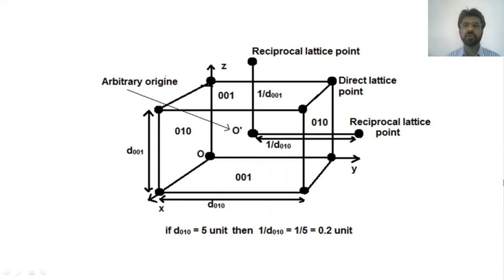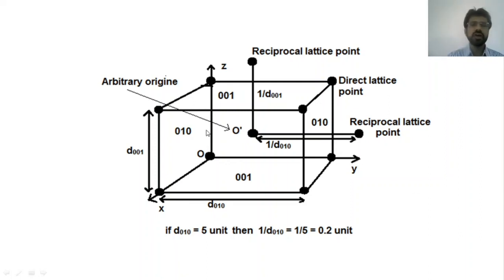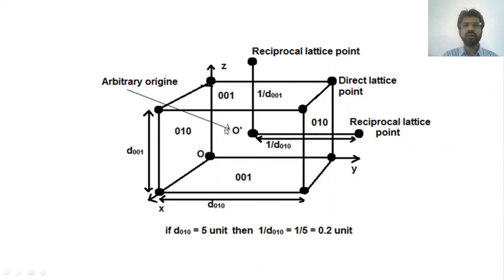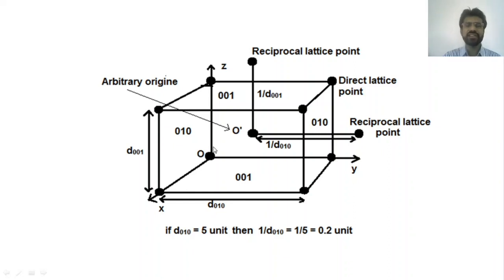Now we will see how to represent the reciprocal lattice in a three-dimensional arrangement. Consider a cube where the edge length is equal to 5 units. If we consider different planes, with the x-axis, y-axis, and z-axis defined here, this plane has the coordinates 001, this plane has Miller indices 010, and this plane has Miller indices 001.